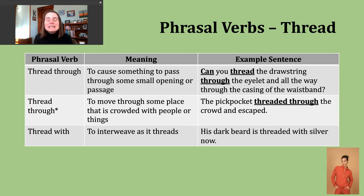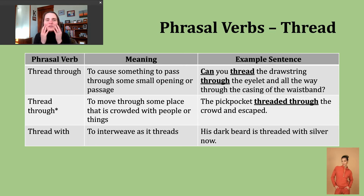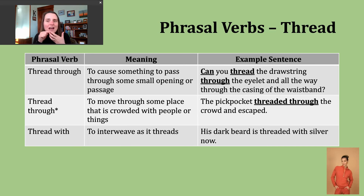The last phrasal verb we'll discuss today is to thread with. The meaning here is to interweave something as if it were a fiber. An example: his dark beard is threaded with silver now. Here we're talking about facial hair — a beard — where someone who normally has very dark colored hair now has little bits of silver or gray hair growing through.